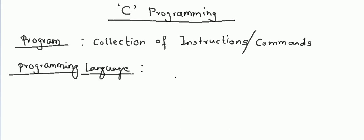One more important term while studying programming language is compiler. Whenever we write a program, it is understandable to human beings only, because we generally write it in an English-like statement which is definitely not understandable to a computer — it is a digital electronic machine that can understand only zeroes and ones. That's why the compiler term gets introduced. What a compiler does is it actually converts your program from high-level language to computer-understandable language.